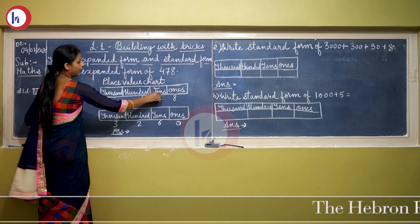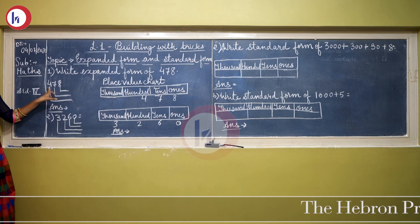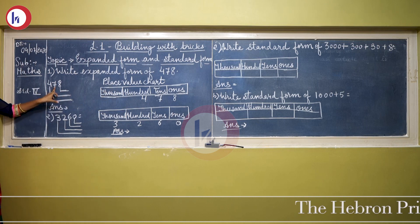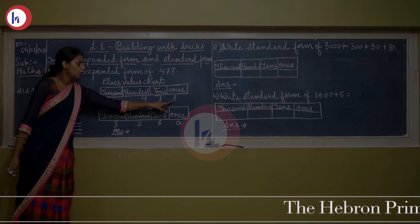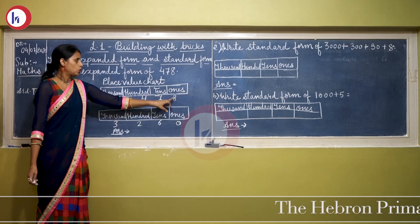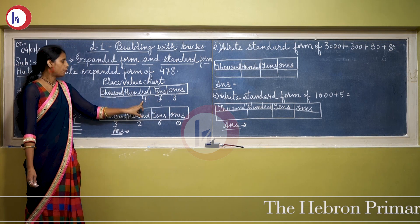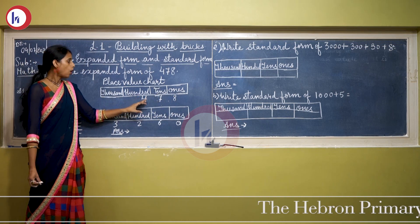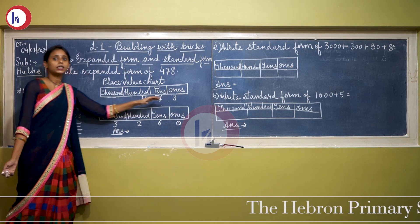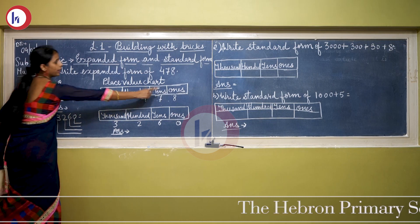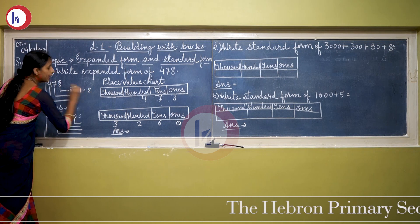We have to arrange the number 874. There are different digits: 4, 7, and 8, and each digit has a different place. Here is the place value chart. 8 is on the ones place, 7 is on the tens place, and 4 is on the hundreds place. Now we have the places of each digit. To find the place value, 8 is on the ones place, so 8 will be multiplied by 1, and the answer will be 8.